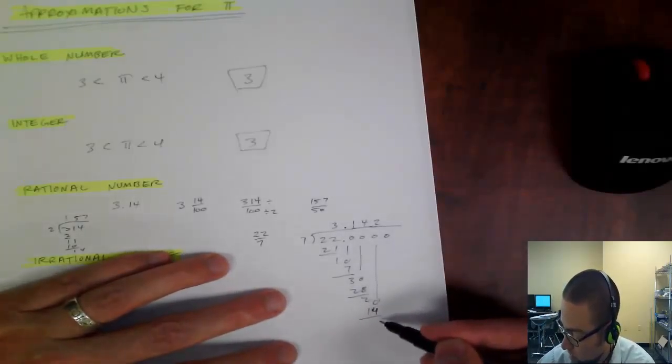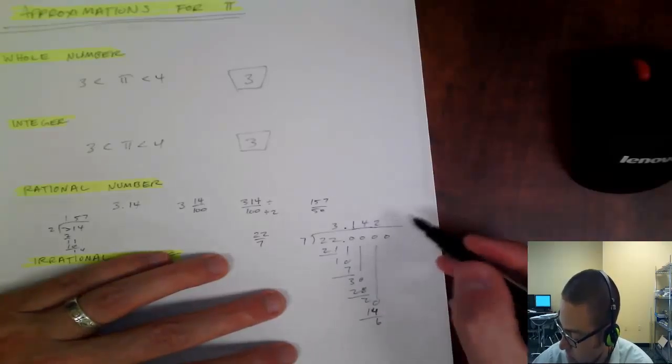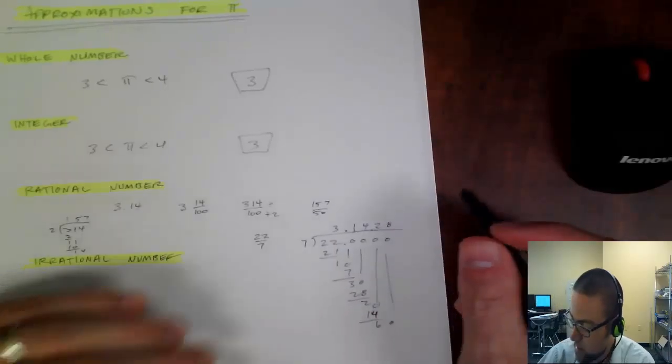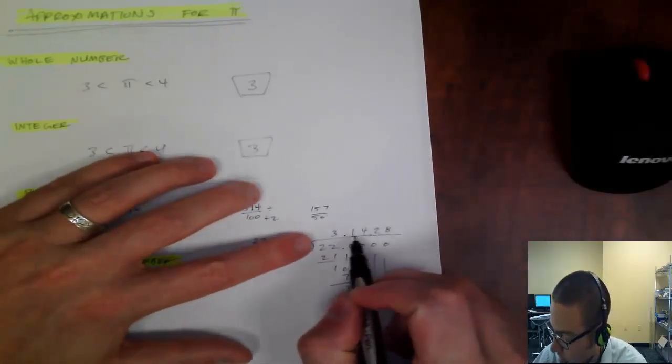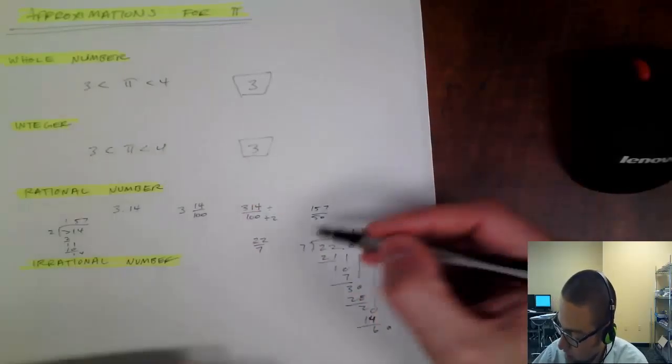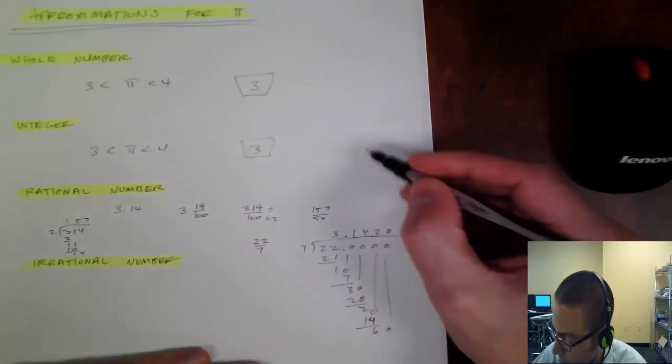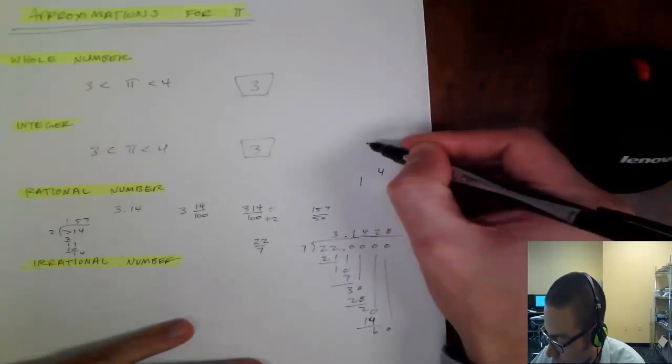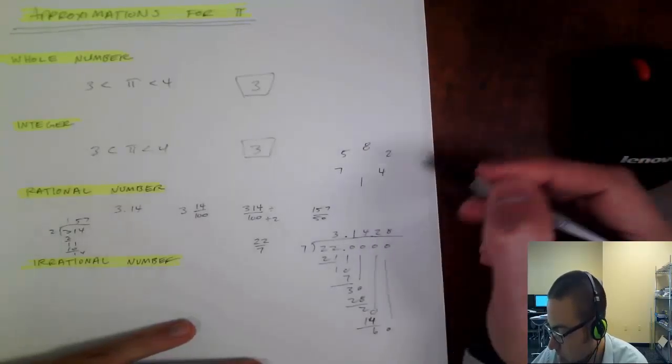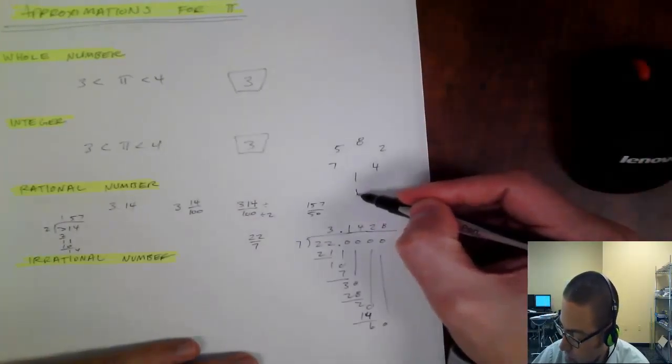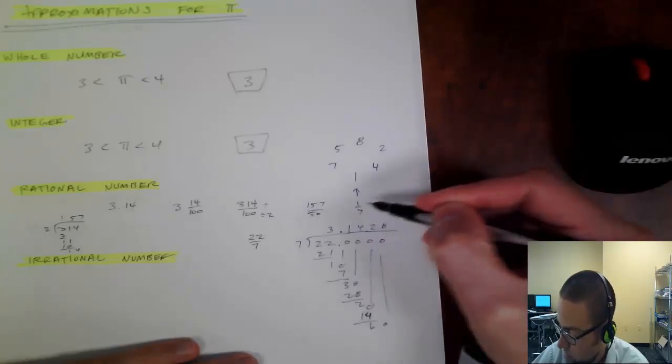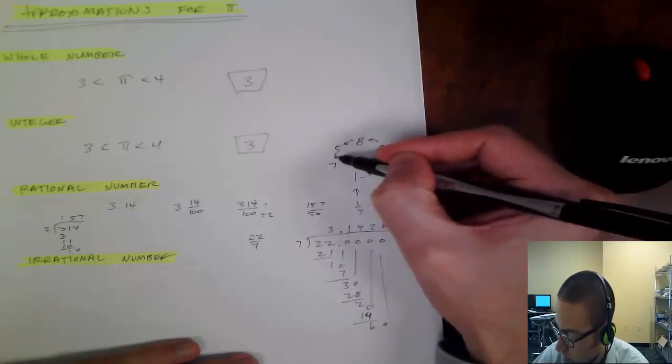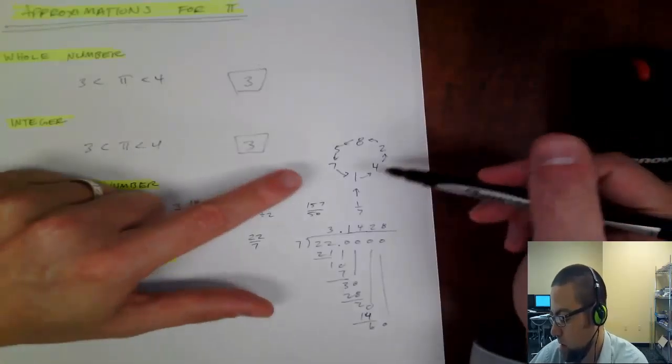So 20 minus 14 is 6, and I'll just do the last one here, so 7 goes into 68 times. And actually, this is my 1, 4, 2, 8, 5, 7. 7ths follow this interesting pattern of 1, 4, 2, 8, 5, 7. And 1, 7th, so 3 and 1, 7th, it would go 1, 4, 2, 8, 5, 7, and back to 1.